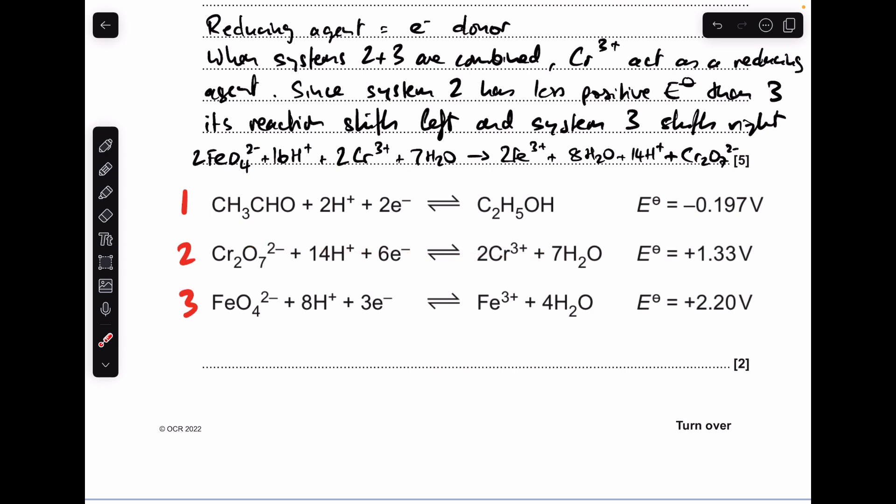We need the two reactions where the chromium species is going to donate electrons, so the electrode potential of the other species needs to be more positive. We're talking about systems 2 and 3. When systems 2 and 3 are combined, the Cr^3+ ions act as reducing agent because system 2 has got a less positive electrical potential than system 3, so its reaction shifts to the left and system 3 shifts to the right. We just need to sort out the H+ and the H2O's because we've got both on each side.